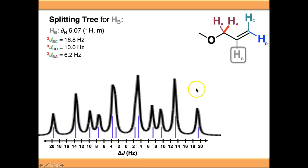If we overlay our signal on top of our splitting tree, it predicts perfectly what our signal looks like - it's just that the signals in the middle are these two lines coalesced into one another.